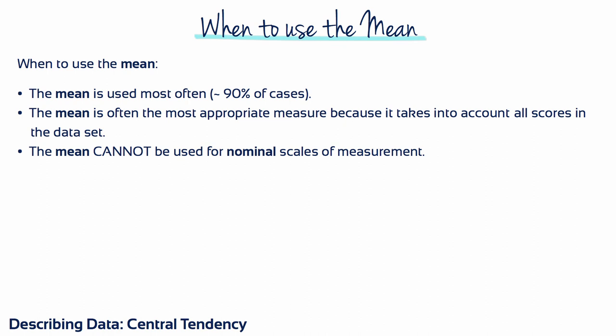How do you decide which measure of central tendency to use? The mean is used in the majority of cases. The mean is often the most appropriate measure because it takes into account all scores in the dataset. But the mean cannot be used for nominal scales of measurement.